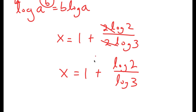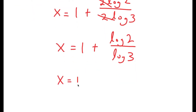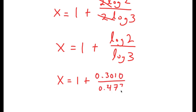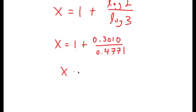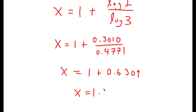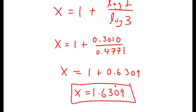Now, log 2 is equal to 0.3010, and log 3 is equal to 0.4771. So if I divide these two, I get x equals 1 plus 0.6309, meaning x is equal to 1.6309. So, this is my answer.